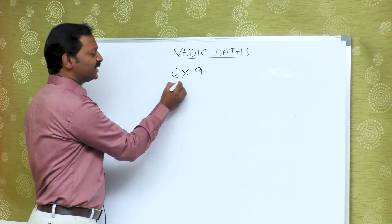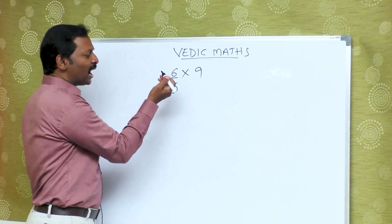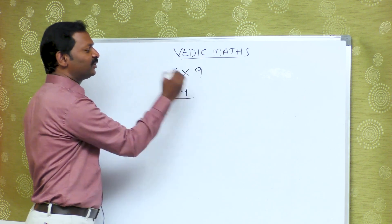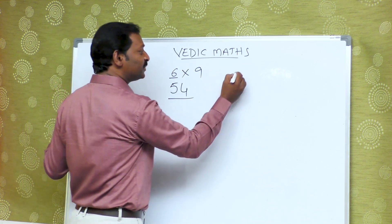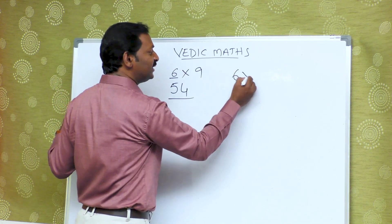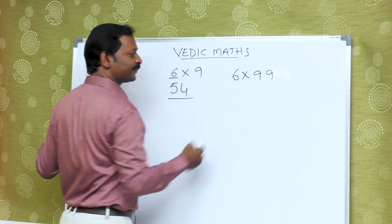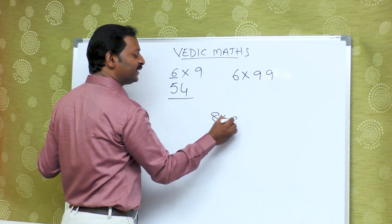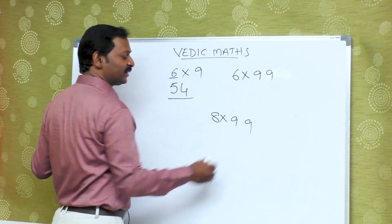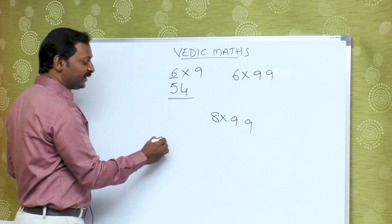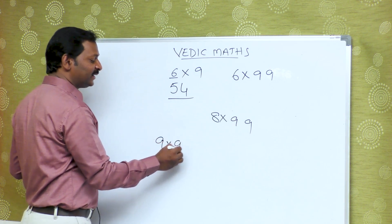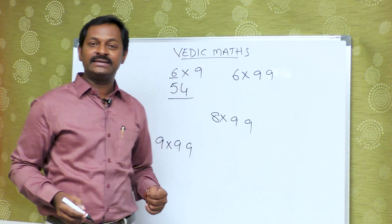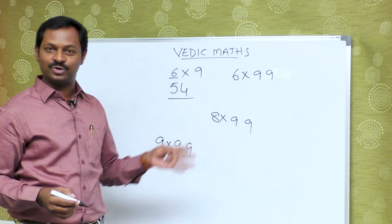If you want to make a number, then you will use a number. If you want to make a 4, then you will have to make a 4. Suppose you have 6 into 99, or 8 into 99, or 9 into 99 — if you want to make a 9 table, then you will have to use a 5-step technique.